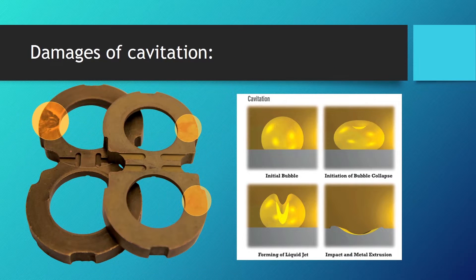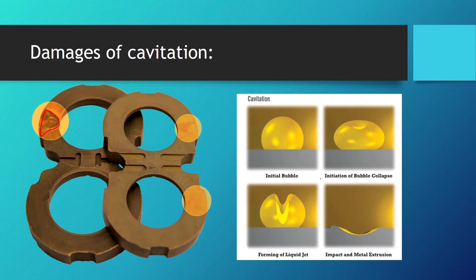Here we can see a picture of a gear pump that had cavitation — a big chunk of metal was damaged, and this is not something that happens in a second. Cavitation damages your components over time. We can see the vapor bubble, and when it gets into a place of higher pressure we have the initiation of the bubble collapsing in on itself, and there we have the formation of the liquid microjet which hits our components and damages our pumps.